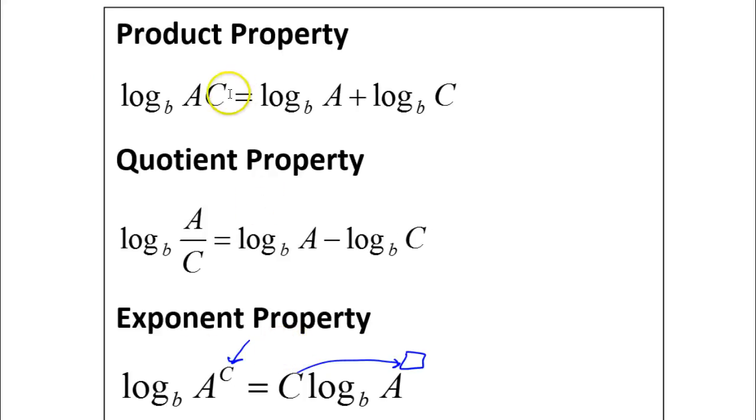Next, I'm going to use the product property, which says that having a sum of logs is the same thing as having a single log, if you go ahead and multiply these two numbers together, these two expressions. So addition condenses down to multiplication.